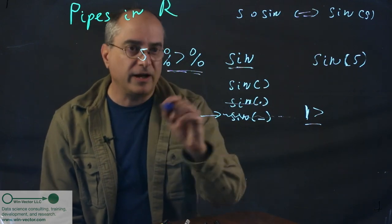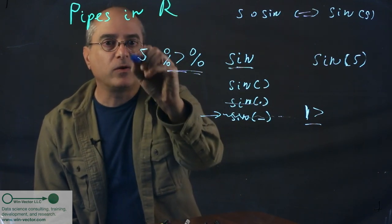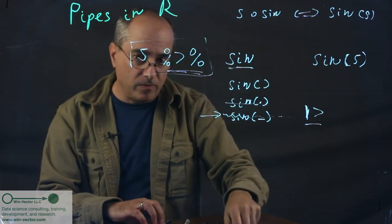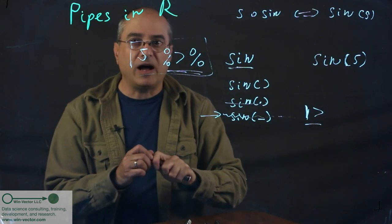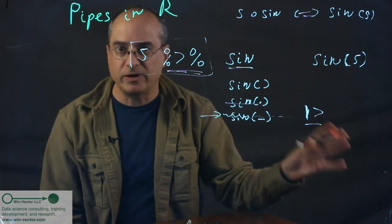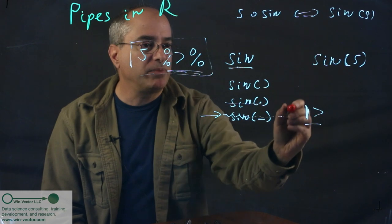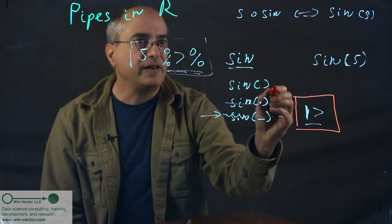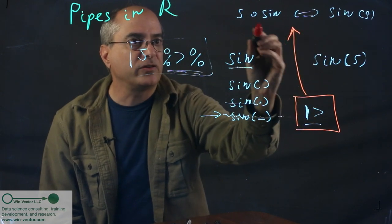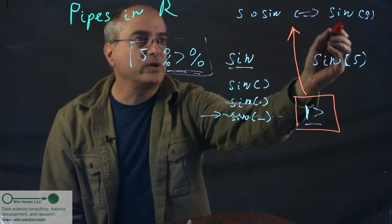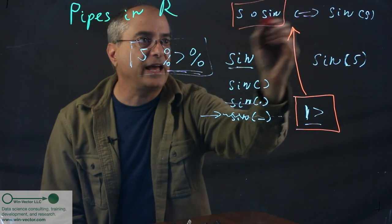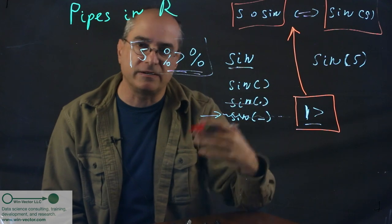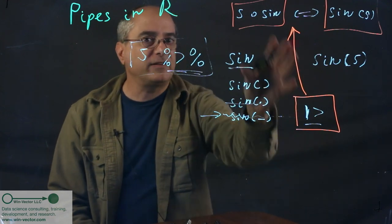The interesting thing about the pipe is, of course, the semantics. What do you want it to mean? Magrittr has fairly complicated emergent semantics. The proposed language inclusion to R sounds like it's going to be at the syntactic level, so that the composition, really, you can write this, and it's as if you wrote this in terms of order of operation, exception handling, stack traces.